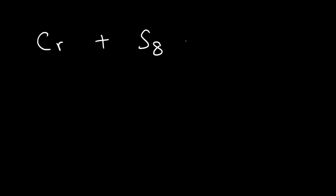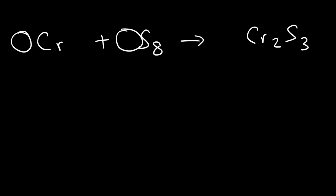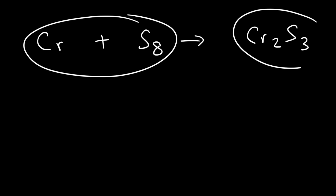In this video we're going to focus on balancing chemical equations. In order to balance an equation, we need to make sure that the number of atoms on the left side is equal to the number of atoms on the right side. To do that we need to introduce coefficients — numbers in front of the reactants and products. On the left side are the reactants and on the right side are the products.